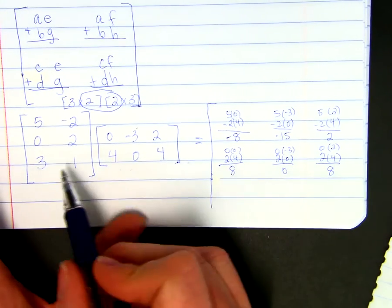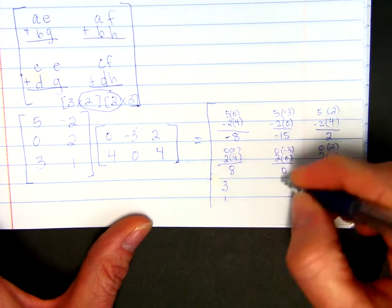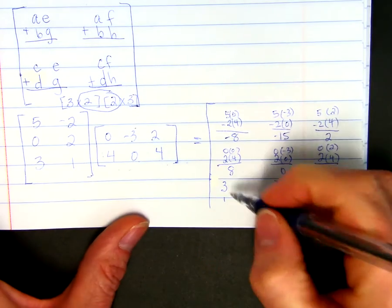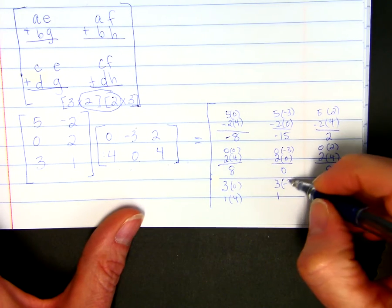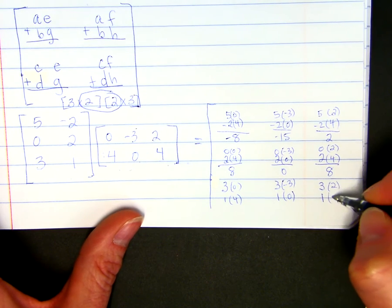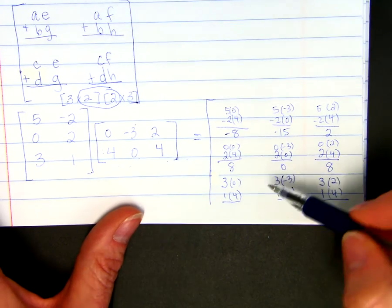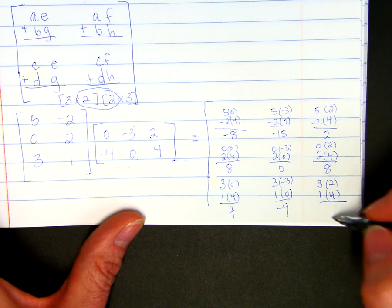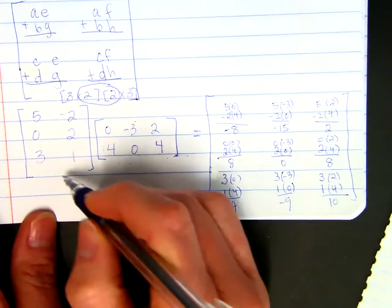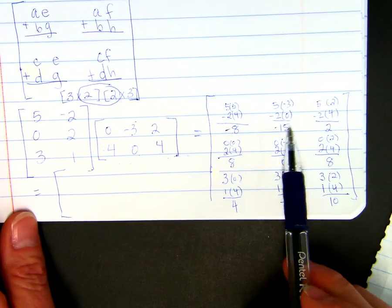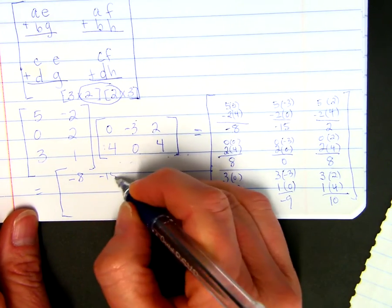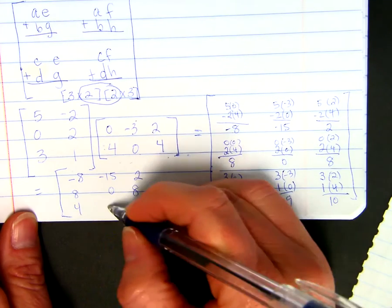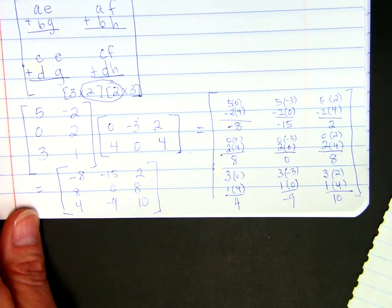To find the third row, we take 3, 1 from the first matrix and write it in each of those. Then we take each column from the second matrix and multiply: 0, 4 then negative 3, 0 then 2, 4. Adding gives 0 plus 4 equals 4, then negative 9, then 6 plus 4 equals 10. So our final 3 by 3 answer is: negative 8, negative 15, 2 across the first row; 8, 0, 8 for the second row; and 4, negative 9, 10 for the third row.